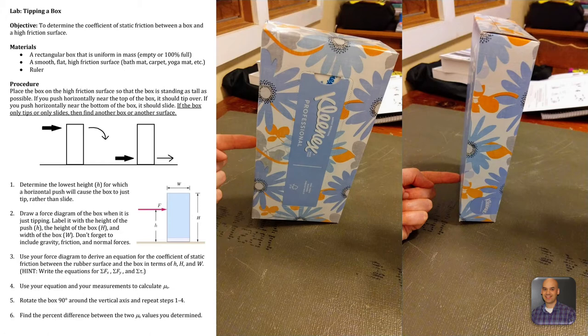When they find that point and they measure that height and the dimensions of the box, they can use those measurements to figure out the coefficient of friction by applying some of the torques is equal to zero and some of the forces is equal to zero. And then they rotate the box 90 degrees and they repeat. And because the box should be a rectangular box, that tipping point is going to be at a different location on the box. And they go through the calculations again and they get two different but hopefully similar values for the coefficient of friction between the box and the grippy surface.